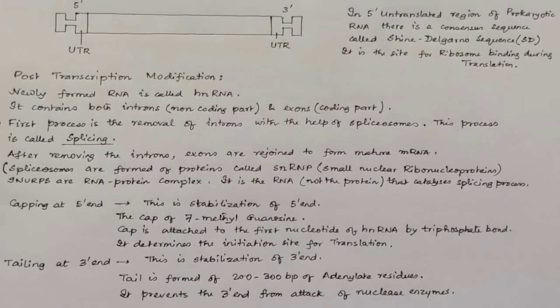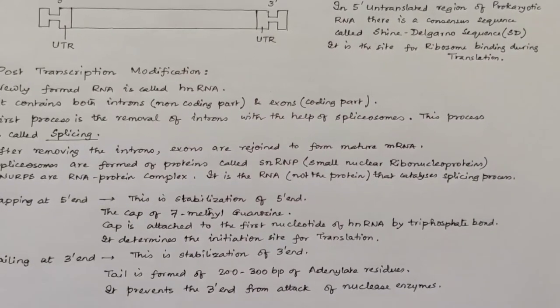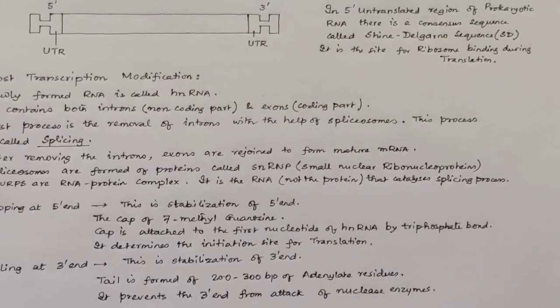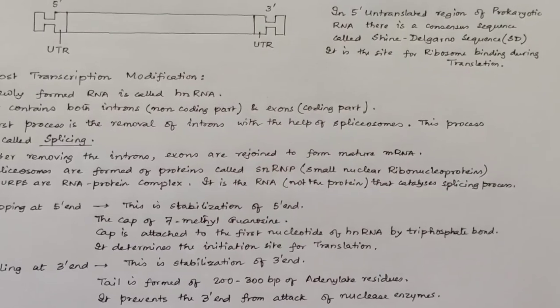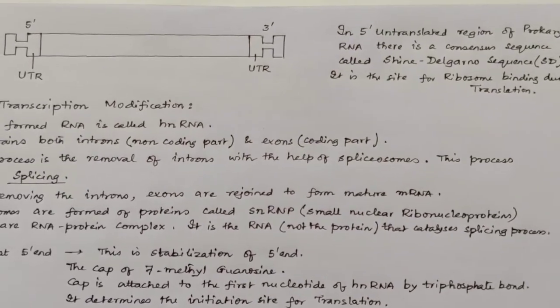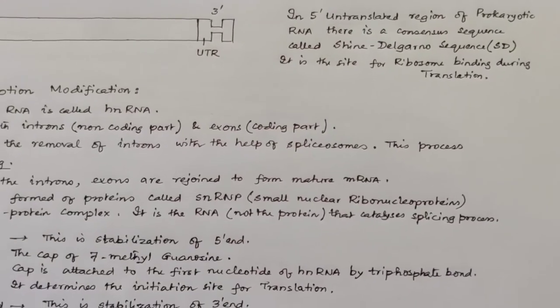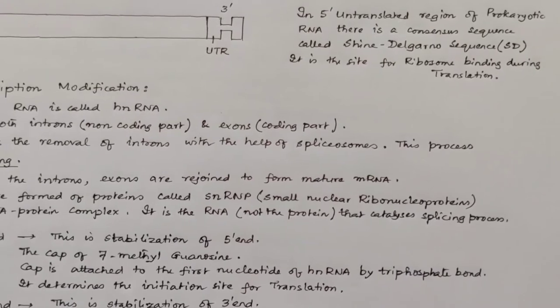Now, as you see the structure of mRNA here, UTR represents untranslated region. In the 5' untranslated region of prokaryotic RNA, there is a consensus sequence called Shine-Dalgarno sequence, or SD sequence. It is the site for ribosome binding during translation. So, the SD sequence helps in ribosome binding.